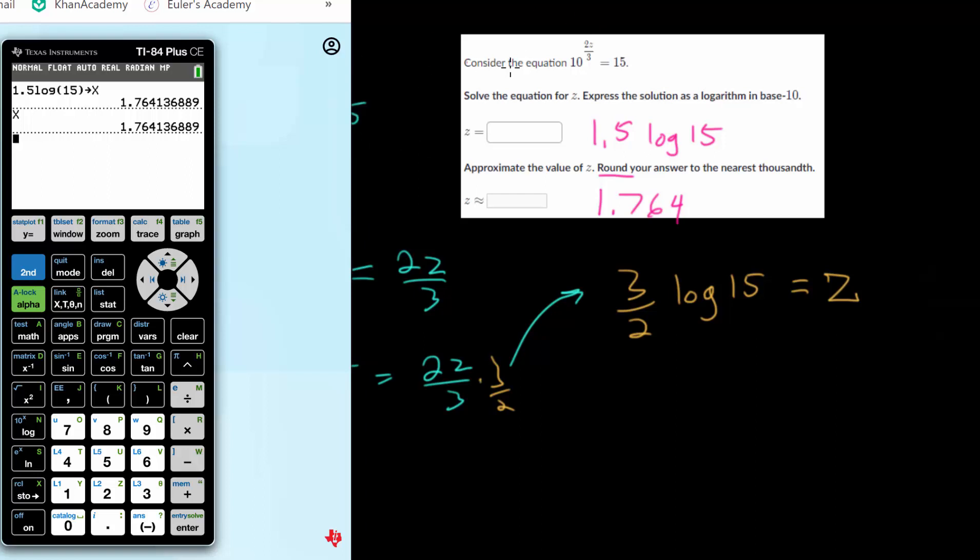And so at this point, let's just type in our original equation. We have 10 raised to the 2x or 2z over 3. So 2 variable divided by 3. And we'll get out of our exponent. We'll have to test that it's equal to 15. So you see the blue test button. So hit second, test. There's your equal sign. And equals 15. So if you get a 1, you know it's correct. If you get a 0, then you know you made a mistake.